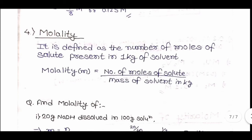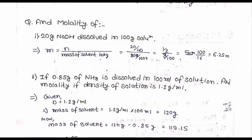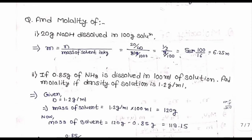Molality, denoted by small m, is defined as the number of moles of solute present in 1 kg of solvent. Molality = moles of solute / mass of solvent in kg. Question: find the molality of 20 grams of NaOH dissolved in 100 grams of solution. Moles of NaOH = 20/40 = 0.5 mol. Mass of solvent = 100 - 20 = 80 g = 0.08 kg. Molality = 0.5/0.08 = 6.25 m.